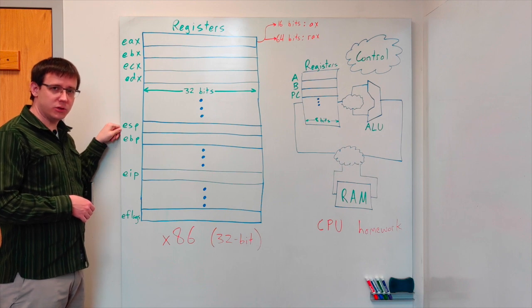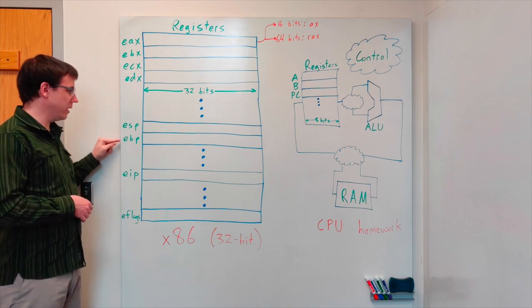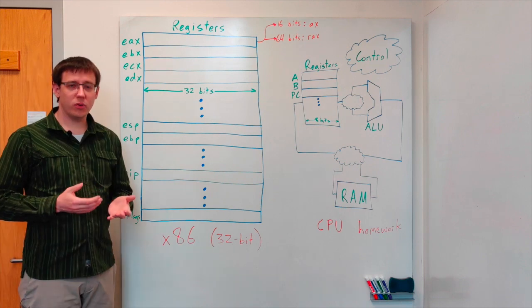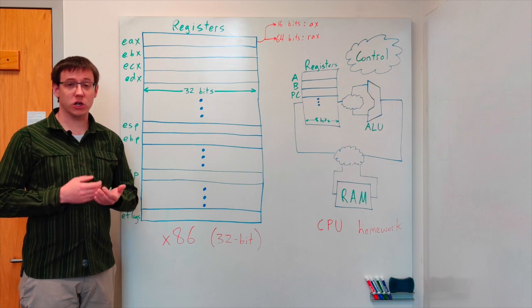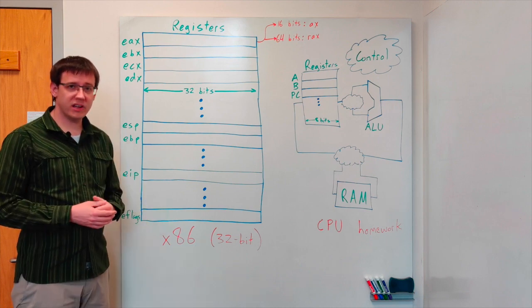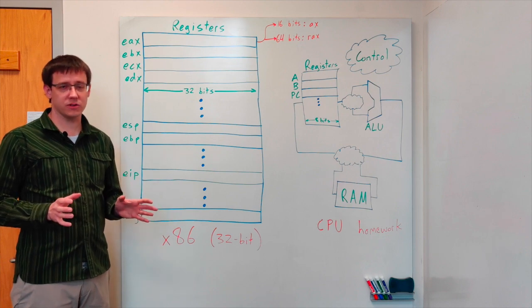We'll also be making extensive use of these two registers, the stack pointer and the base pointer. The stack pointer and the base pointer always hold memory addresses and tell us where the current stack frame begins and ends. x86 has a number of other registers that we won't need to worry about for our exercises.